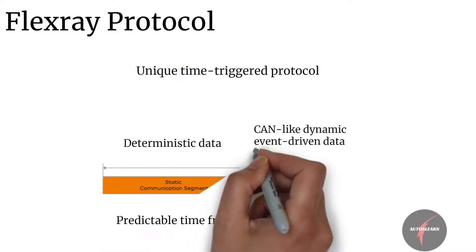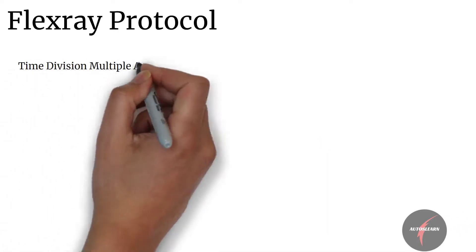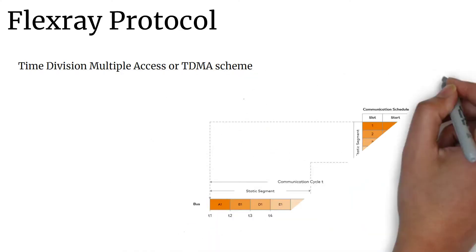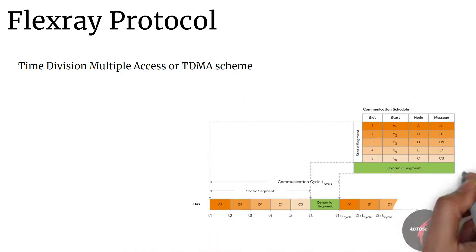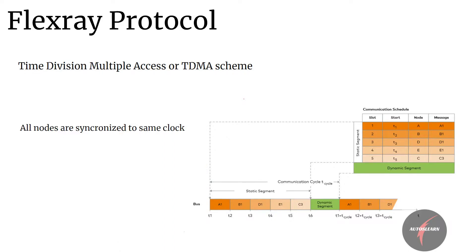FlexRay accomplishes this hybrid of core static frames and dynamic frames with preset communication cycles that provide a predefined space for static and dynamic data. FlexRay manages multi-node communication with a time division multiplex access or TDMA scheme. Every FlexRay node is synchronized to the same clock and each node waits for its turn to write on the bus.